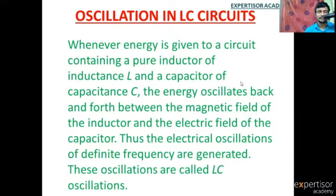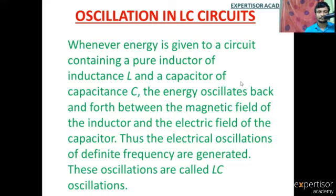The inductor and capacitor are the two electronic devices connected in the circuit. Two different fields are generated: the capacitor generates an electric field. The energy stored in the capacitor is given by Q squared divided by 2C, where Q is the charge and C is the capacitance.